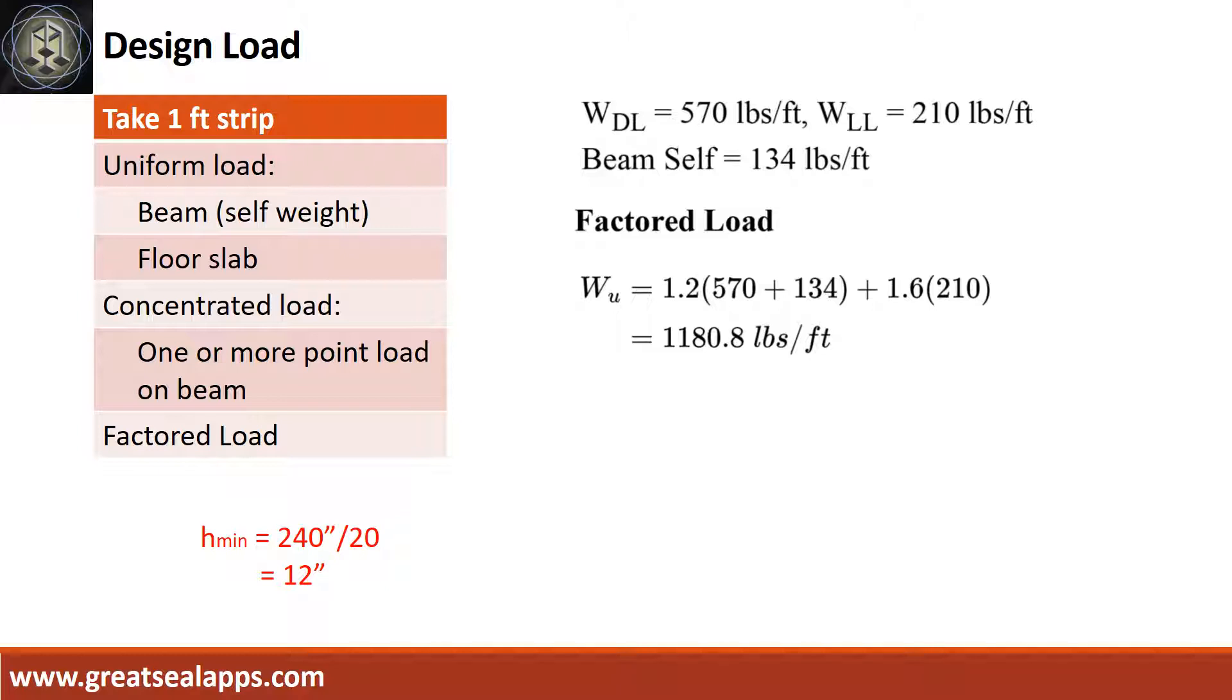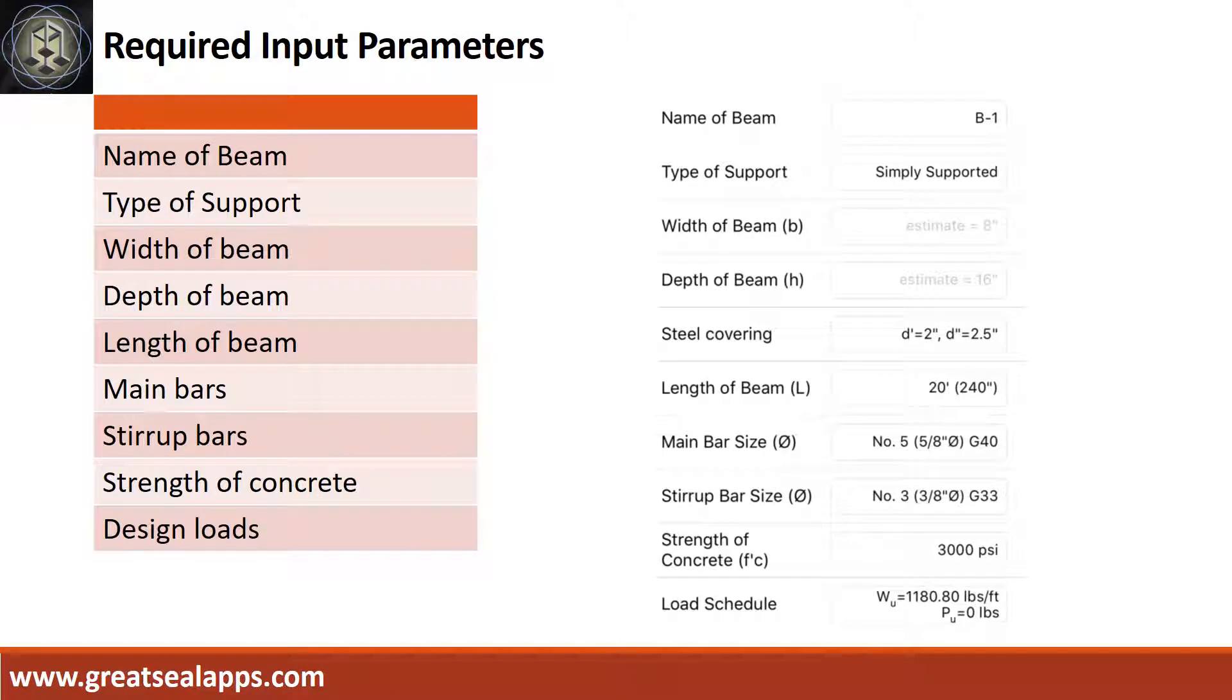The beam's self-weight is 134 pounds per foot for a total factored load of 1180.8 pounds per foot. Enumerate input parameters required. Name of beam, B1.